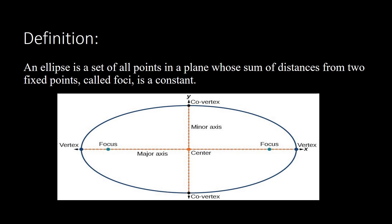If this is your ellipse, according to the definition, you look for the distance from a point on the ellipse to one focus, and then the distance from that same point to the other focus. Once you add those two distances, the result is constant all throughout the ellipse. If you take another point and add its distances to each focus, it is still the same as with the first point. That is an ellipse.